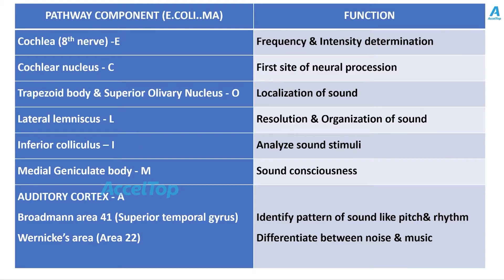We will just see few points about each component of the auditory pathway. 8th nerve, otherwise called as cochlear nerve, the function of 8th nerve is frequency and intensity of sound determination. Whereas cochlear nucleus processes the neural procession, this is the first site of neural procession. The localization of sound is taken care by the superior olivary nucleus, also trapezoid body.